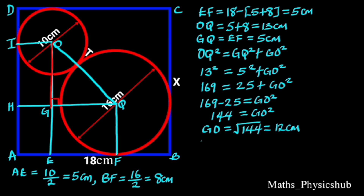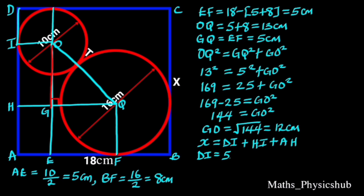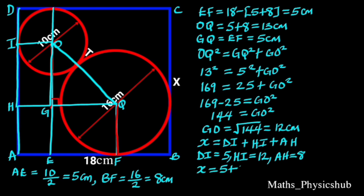To find X: X equals DI plus HI plus AH, reason being opposite sides of a rectangle. DI equals the radius of the small circle, that is 5 cm. HI equals GO, that is 12 cm. And AH equals the radius of the big circle, which is 8 cm. Substituting these values gives X equals 5 plus 12 plus 8, which equals 25 cm.